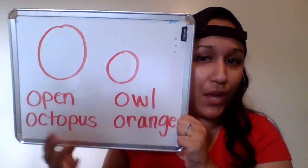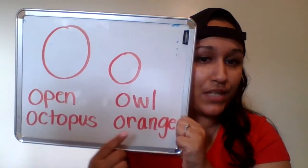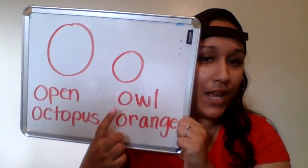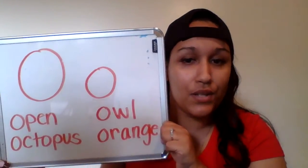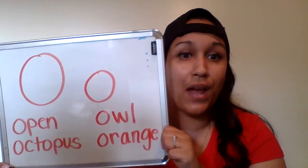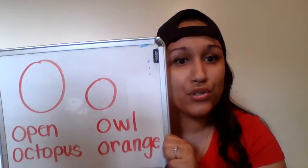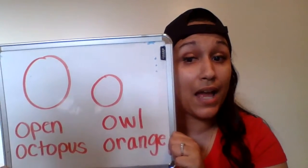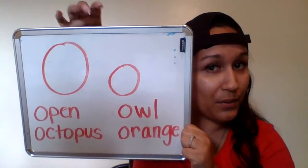Some words that start with O: open, octopus, orange, and owl. Those are all O words. So make sure you guys go and look around your house or even outside for some O words, okay.